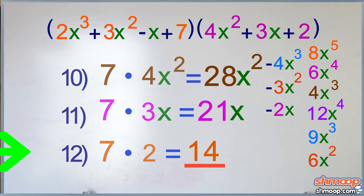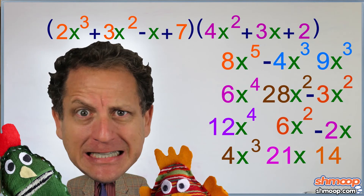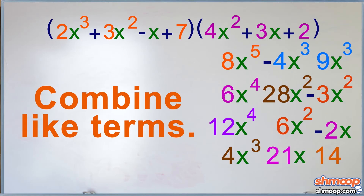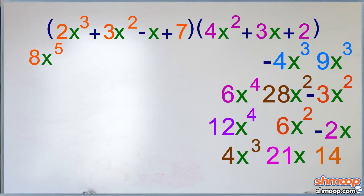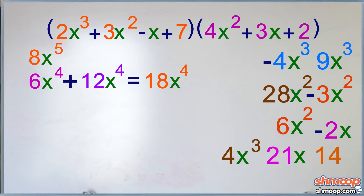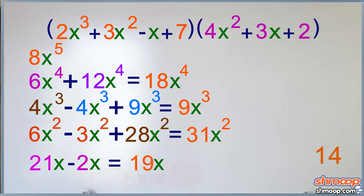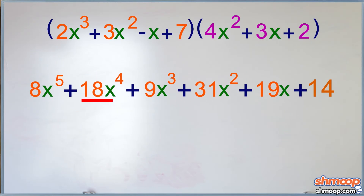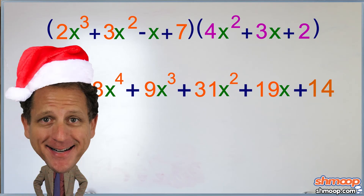Okay, great. So now we have this — what a mess. No wonder people cringe when they hear how this stuff works. But we can make it much, much prettier. We just have to combine like terms. We only have one term to the fifth power, so we leave that one as is. Then we add the x-to-the-fourth terms, then the x-to-the-third terms, then the x-squared terms, then the x terms, and the constant is left as is. So we finally get 8x to the fifth plus 18x to the fourth plus 9x to the third plus 31x squared plus 19x plus 14. And a partridge in a pear tree.